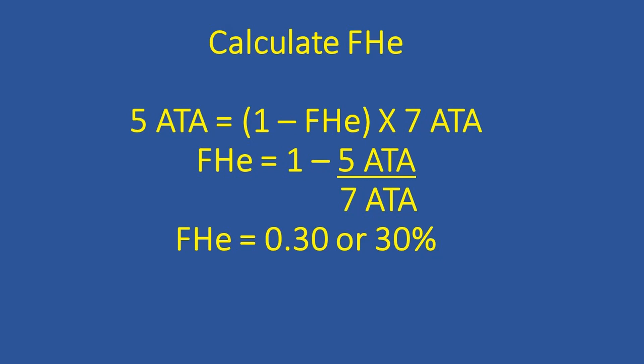All right, so here's the somewhat tricky part. We're going to calculate the fraction of helium. So we're going to put on the left side of the equation the 5 ATAs, which is your equivalent narcotic depth ATAs, and then we're going to multiply that by a term: 1 minus the fraction of helium. So this represents the total narcotic percentage that you're going to be dealing with with your gas. So we then multiply that term by the 7 ATAs, which is our actual depth. So this equation basically is attempting to balance the ATAs on both sides. So how much do we need to reduce the effect of the narcotic gases when we are at 7 ATAs? And the percentage of narcotic gas is reduced by the fraction of helium.